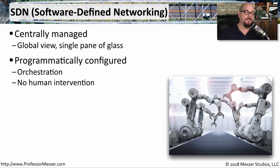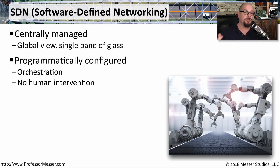Another useful property of an SDN is that it can be orchestrated. This means you can programmatically configure how things occur on the network, and often this can be done automatically. For example, an SDN may constantly monitor part of the network, and if it becomes congested or needs more resources, those resources can be deployed automatically.